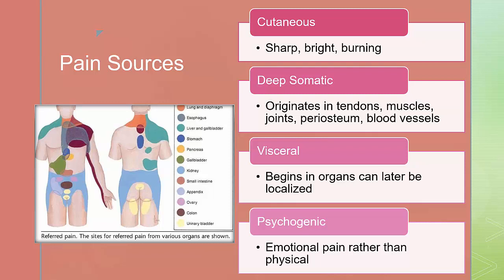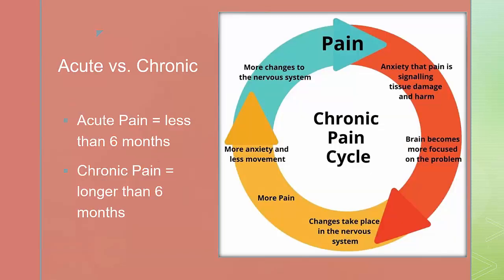Cutaneous pain is sharp, bright, burning, and can have a fast or slow onset. Deep somatic pain originates in tendons, muscles, joints, the periosteum, and blood vessels. Visceral pain begins in the organs and is diffuse at first, but may later be localized. Psychogenic pain is felt by the individual, but is emotional rather than physical. Acute pain lasts less than six months. Chronic pain typically lasts longer than six months and is classified by the International Association for the Study of Pain as pain that continues beyond the normal healing time.